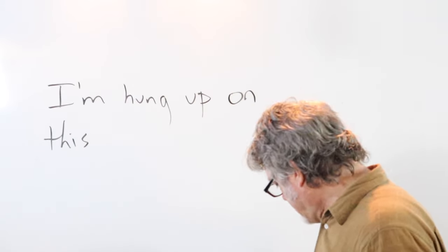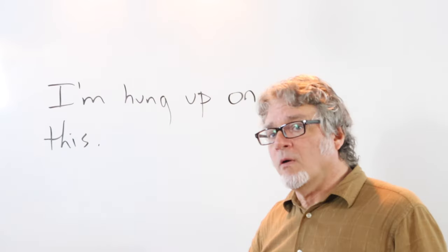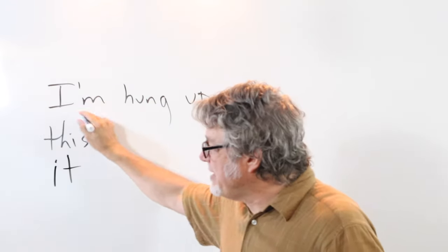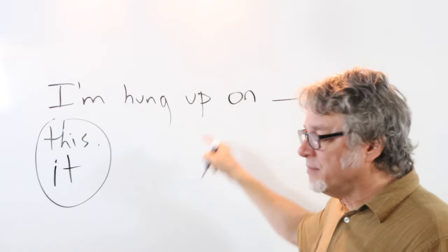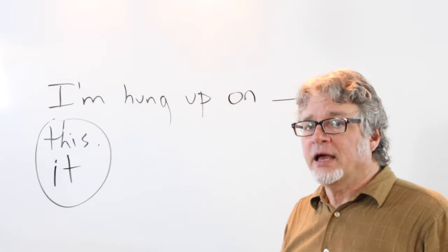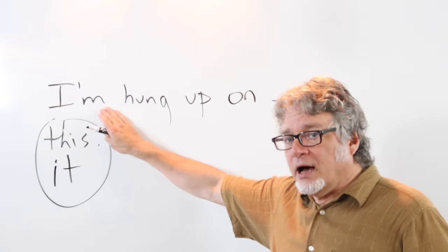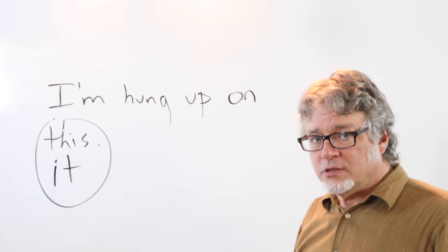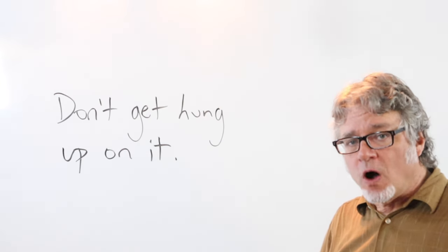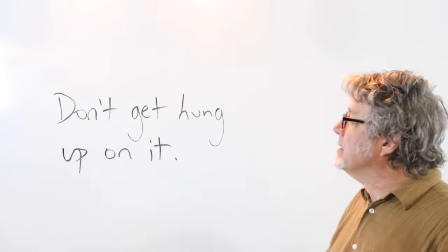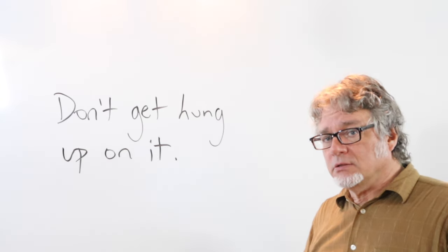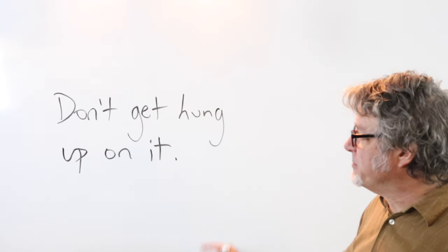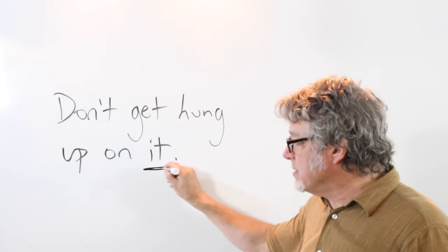'I'm hung up on this' or 'I'm hung up on it' — but you need something after the preposition. If you say only 'I'm hung up on' with nothing after it, it will sound strange. In the form of a command when talking to another person, you can say: 'Don't get hung up on it' — meaning don't worry about it, it's not that important.